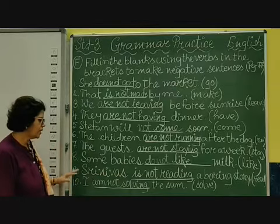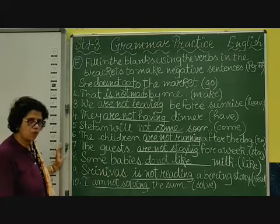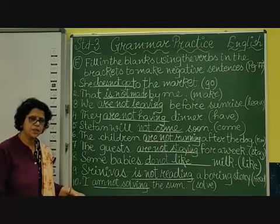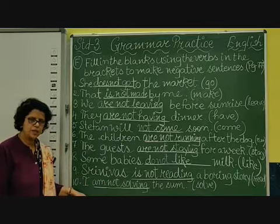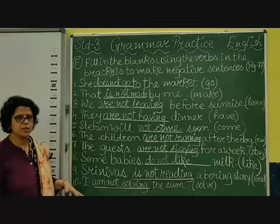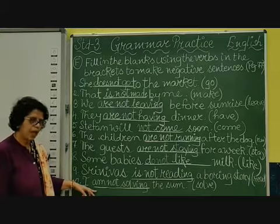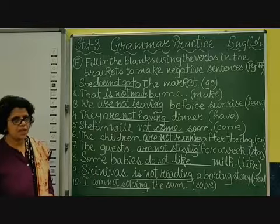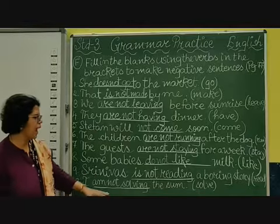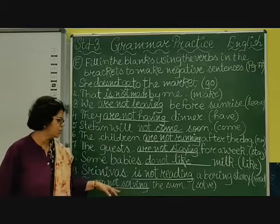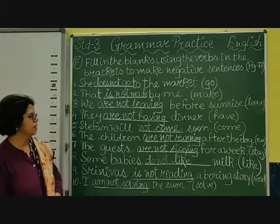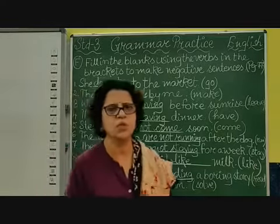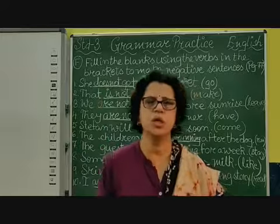Number ten: 'I dash the sum,' and the verb is 'solve.' The answer is: 'I am not solving the sum.' 'I' is singular, and with 'I' in present continuous tense we use 'am,' then the negative 'not,' then 'solving.' When adding -ing to 'solve,' we omit the E — S-O-L-V-I-N-G. So in this way negative sentences can be formed. Do it in your workbook.